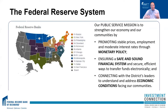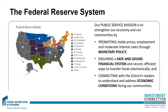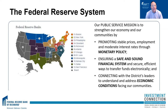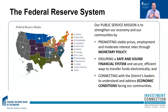The Federal Reserve System — that's what I work for. A lot of people, when they think of the Fed, think of the Board of Governors in Washington. But the Federal Reserve System is actually made up of 12 districts across the United States, each headquartered with a Federal Reserve Bank. The role of the Federal Reserve is promoting stable prices, employment, and moderate interest rates — most people know that through monetary policy and the Federal Open Market Committee. It also provides a safe and sound financial system, and connects with community stakeholders for economic conditions.